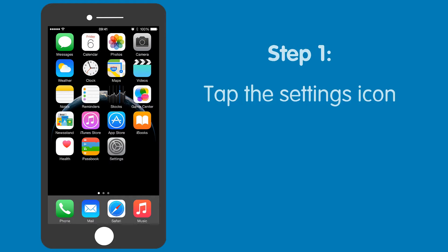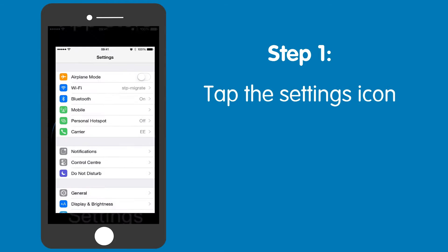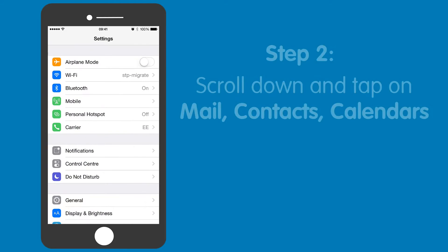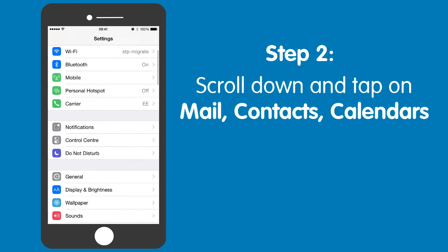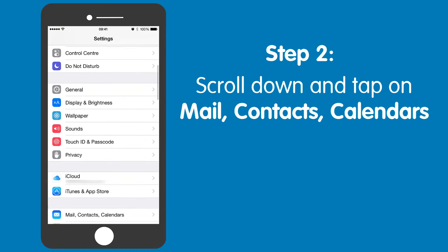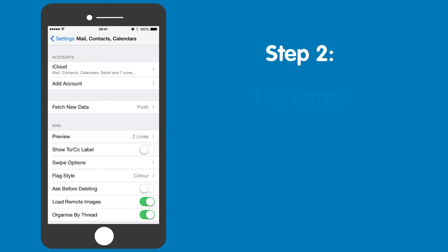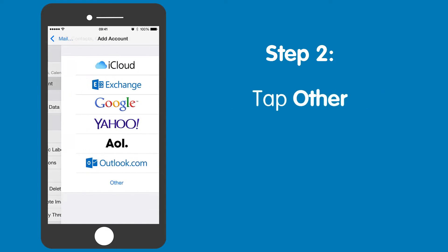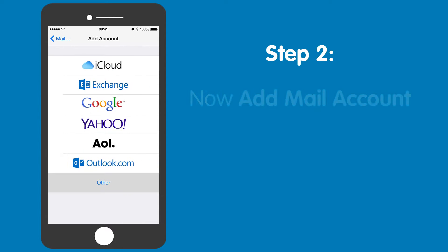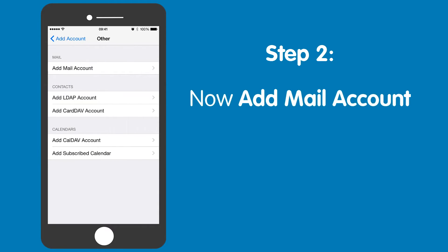Step one: grab your iPhone and tap on the settings icon. Step two: scroll down and tap on Mail, Contacts and Calendars, and then Add Account, Other, and then Add Mail Account.